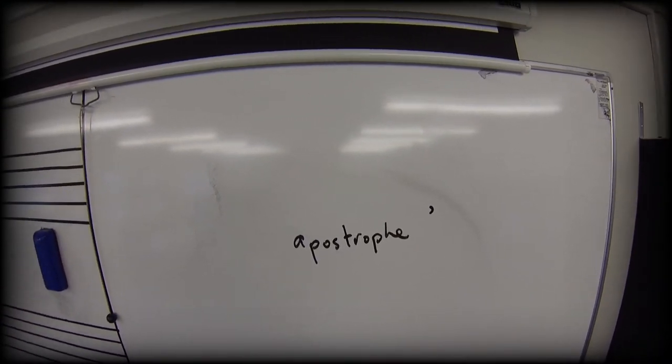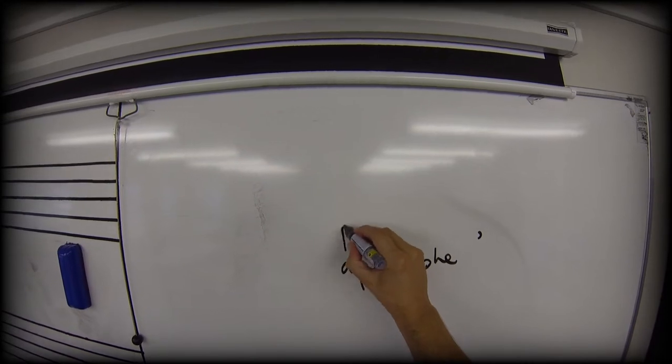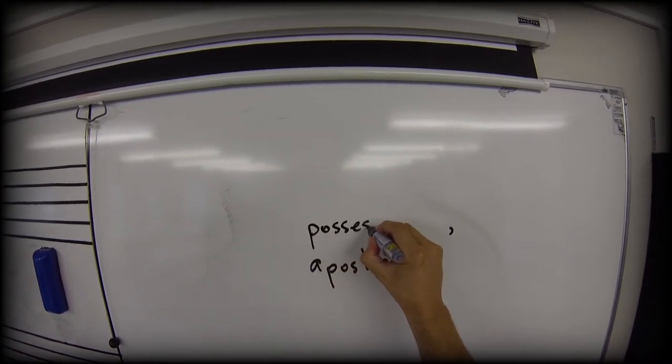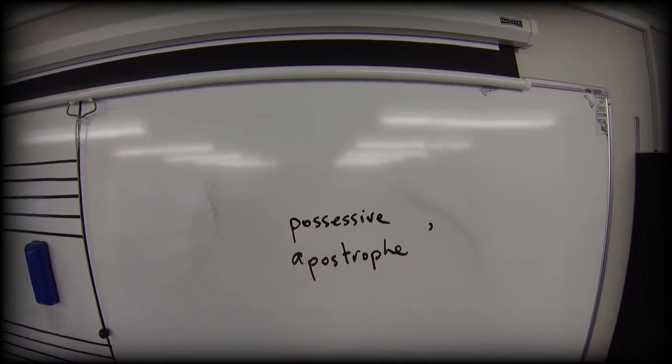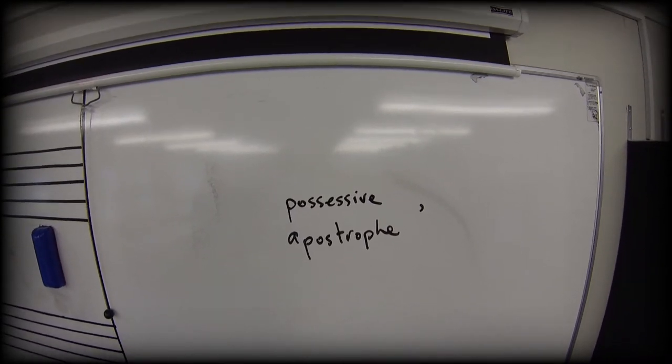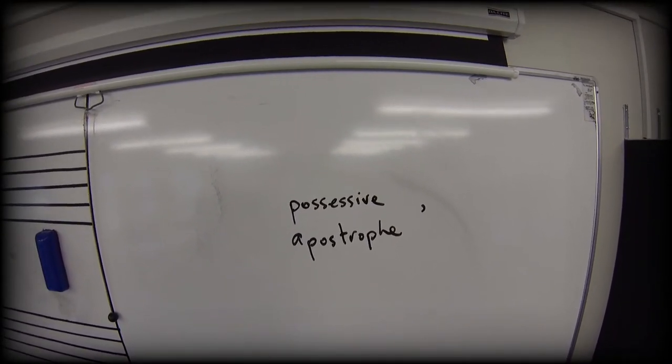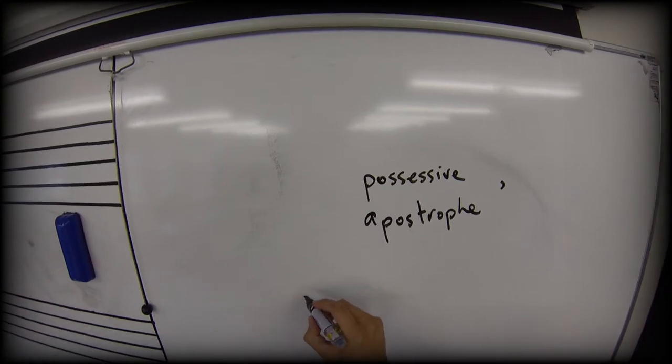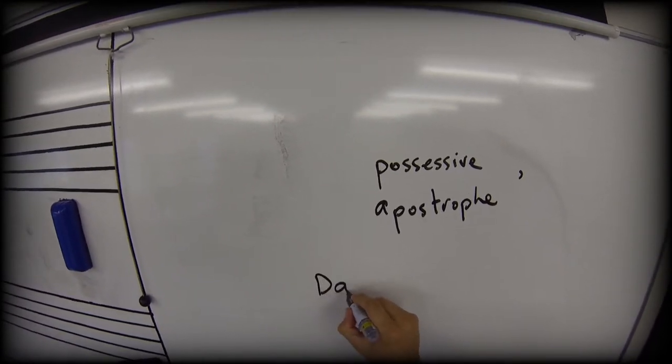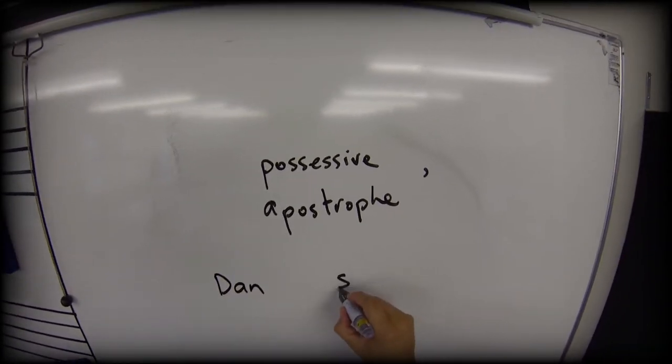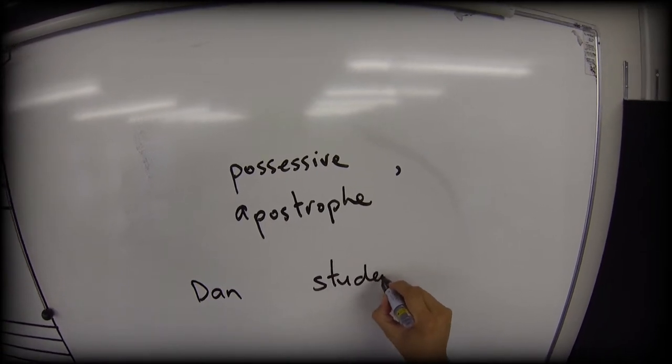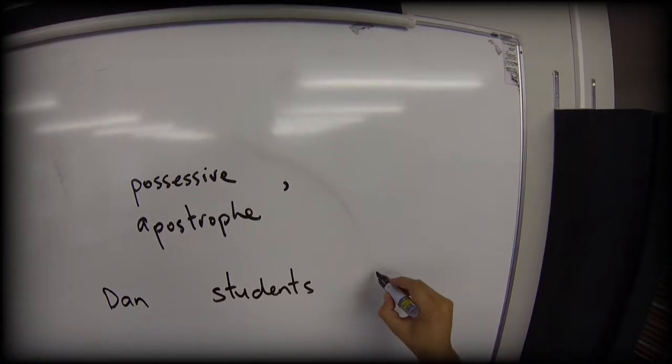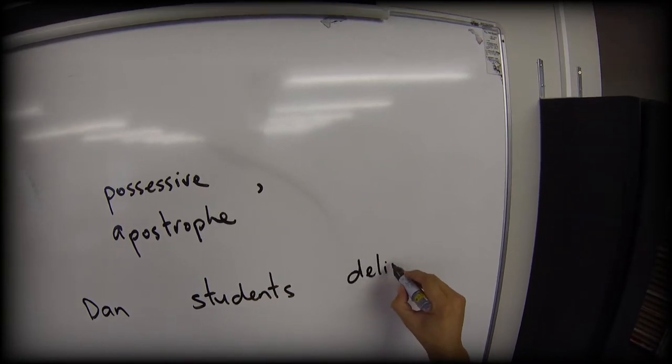The first kind of apostrophe use we're going to talk about is the possessive apostrophe, which is showing ownership over something by something else. So let's say take Dan. Now Dan has some students, and they feel some sense of delight.